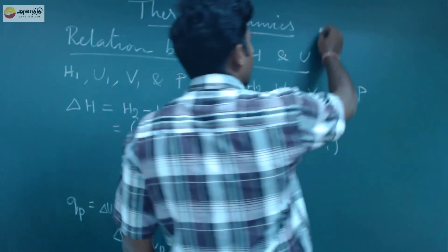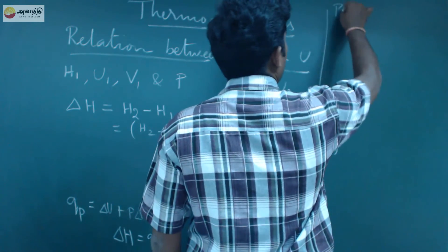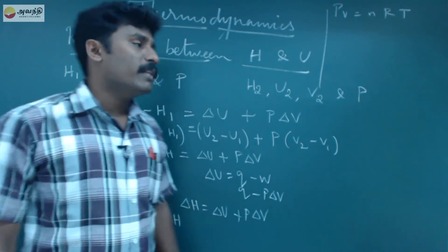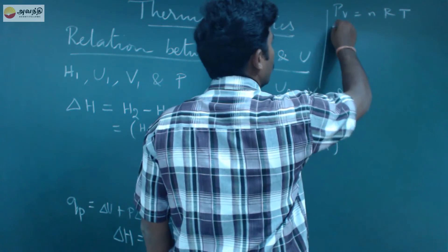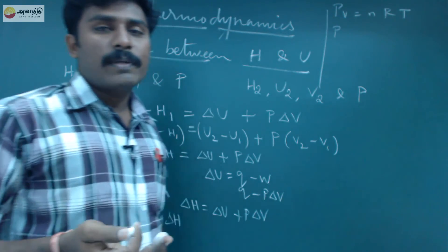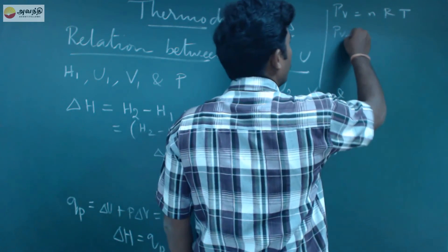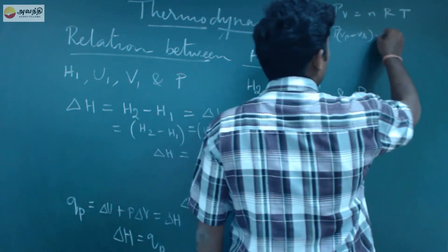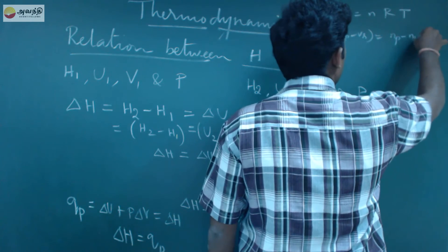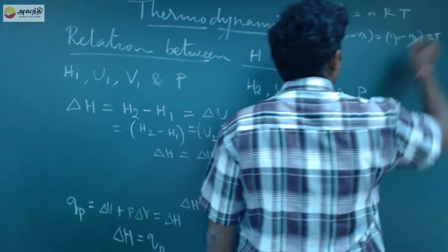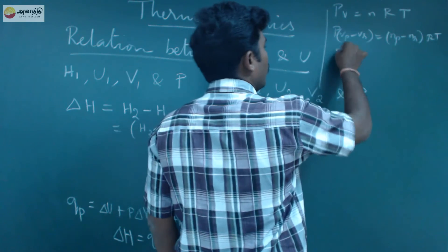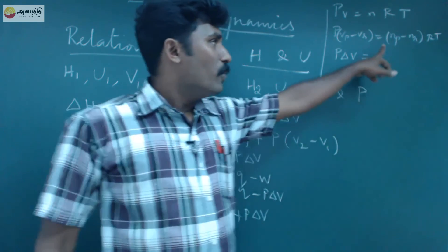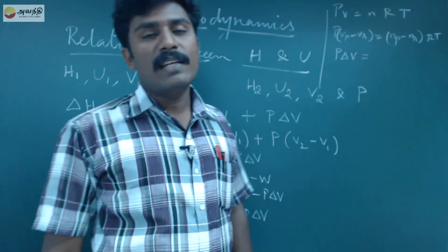Now let's go to the ideal gas equation: PV equals nRT. The difference gives us PΔV equals ΔngRT, where Δng is the number of moles of product minus number of moles of reactant. So PΔV is equal to ΔngRT.